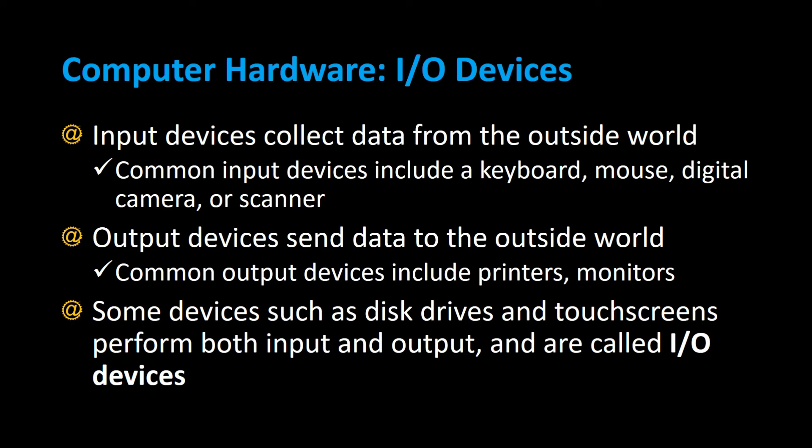Some devices, such as disk drives and touch screen monitors, perform both input and output, and they're called I/O devices. On a touch screen, data is going into your program by you touching the screen — those touches are input — and then it's displaying the output right back to you. A disk drive means you can store data on a USB drive, for example, and read data right back from that same USB drive. So it functions as both input and output.